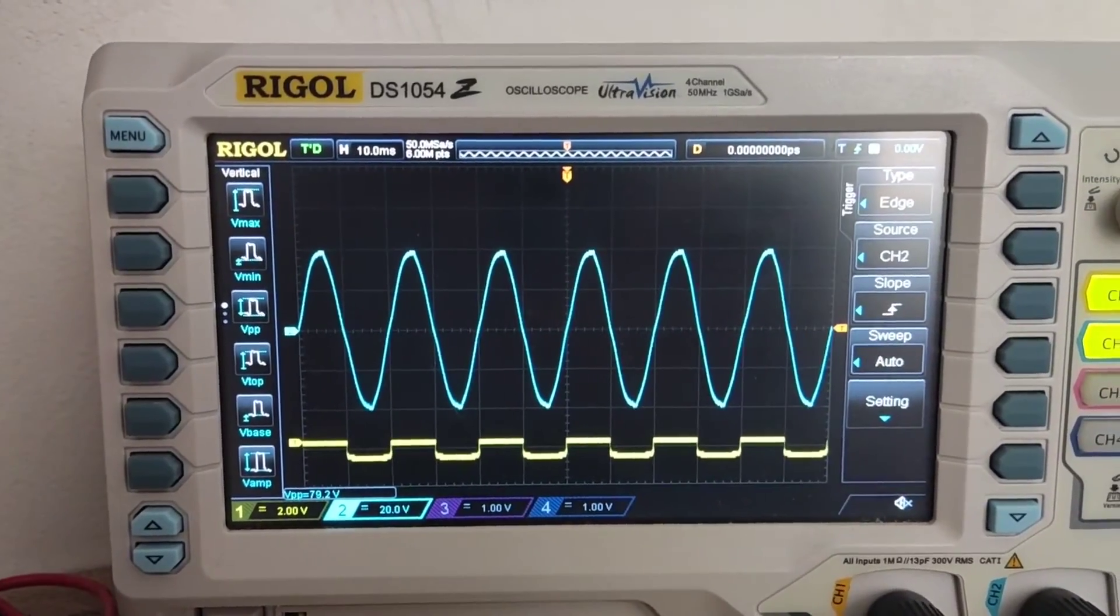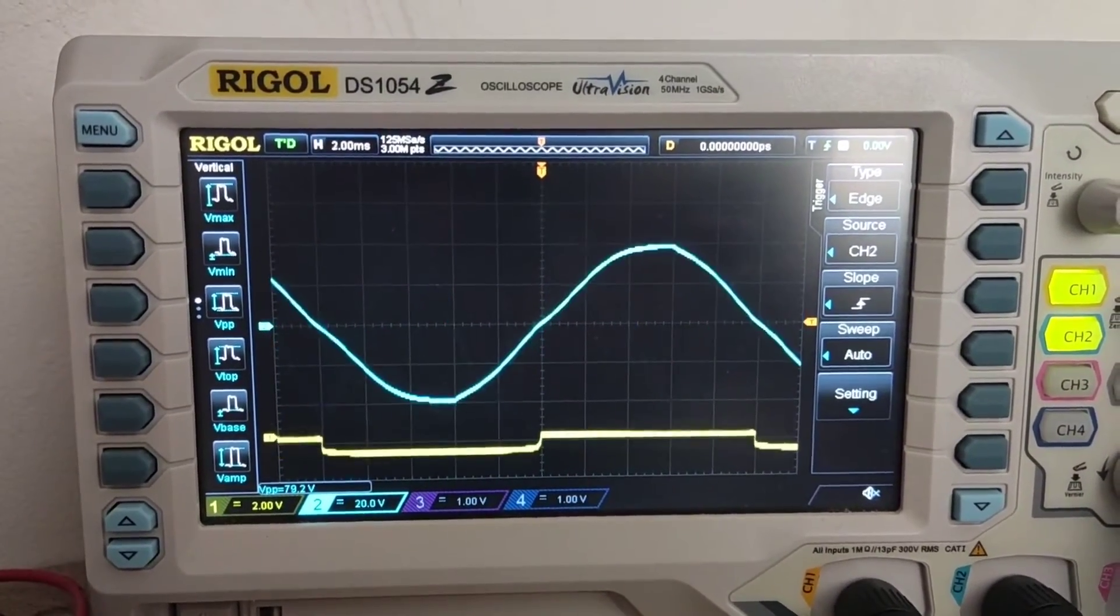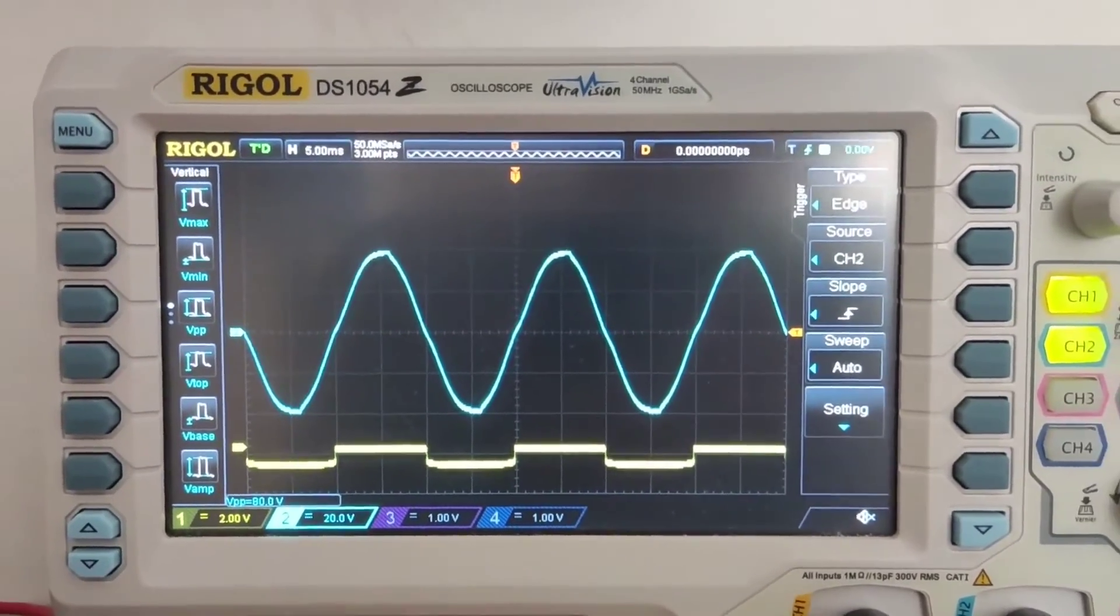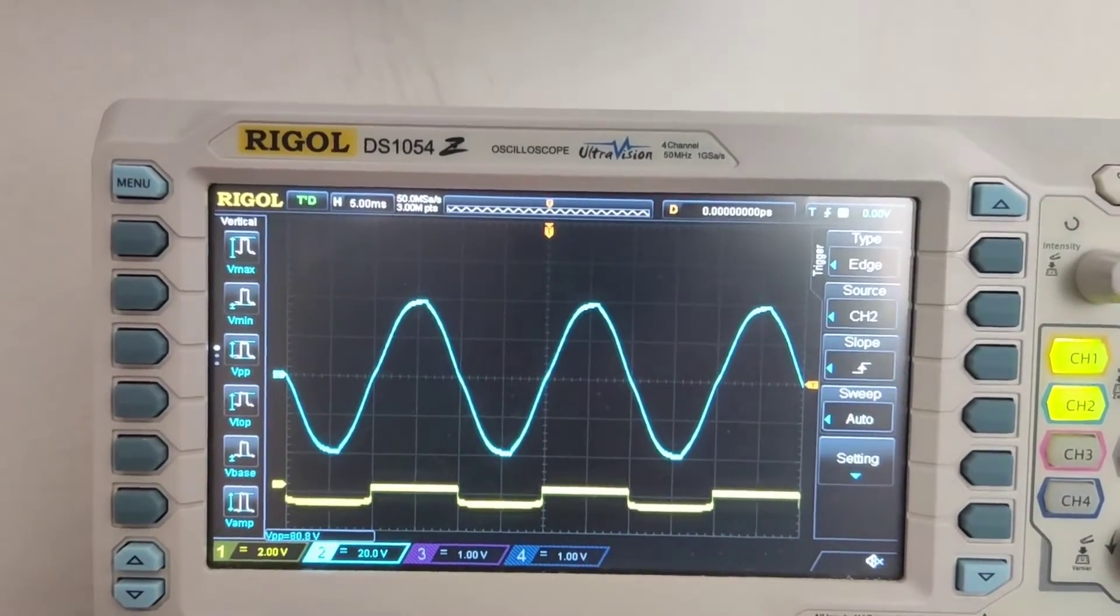As you can see, it produces sine wave, a little bit distorted, but it's okay. The zero crossing detector is switched off. Now, I'm gonna switch it on.